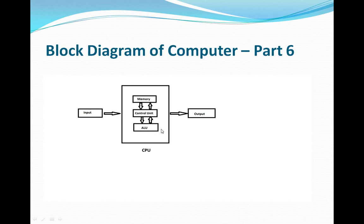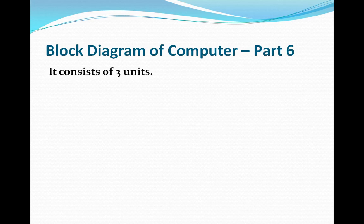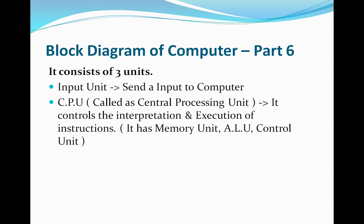Let's see what each component or each unit means. The input unit is to send an input to a computer. CPU is called the central processing unit; it controls the interpretation and execution of instructions. It has a memory unit, an ALU which is called the arithmetic logic unit, and a control unit.